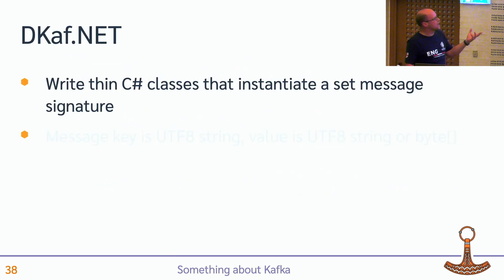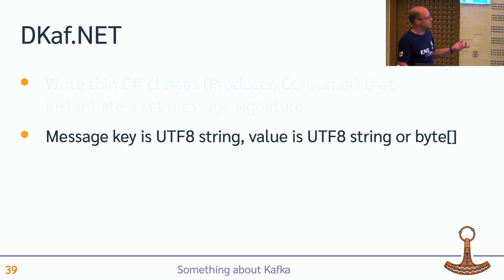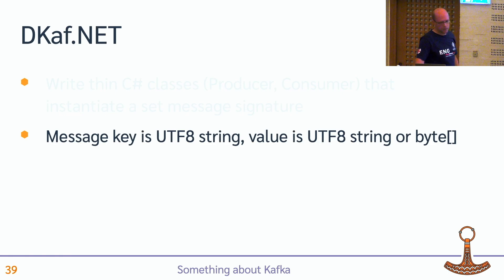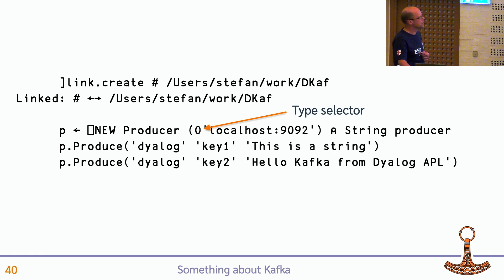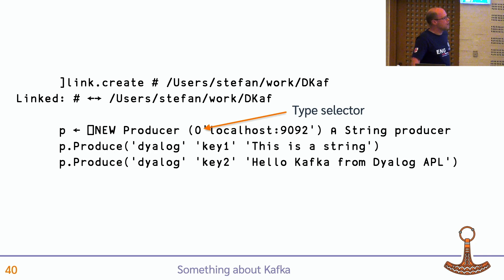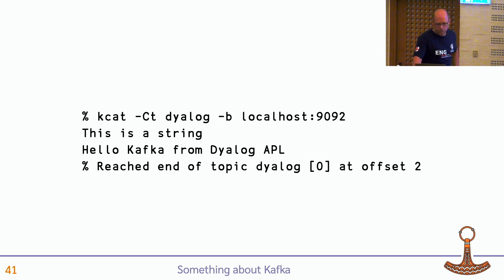So we have a strategy: we can write these thin C# classes that instantiate a set message signature. I made two of these — both use string keys. One has a string payload, and the other has a generic byte array as a payload. And this is what it would look like inside Dialog: I link in my code, create a producer, feed in this somewhat ugly but effective type selector. Zero means string, and I'm producing two messages that are both strings with string keys onto the topic called Dialog.